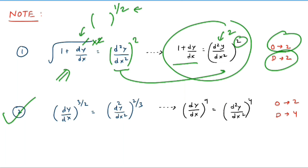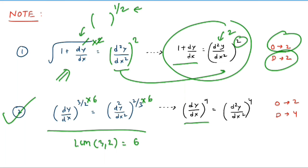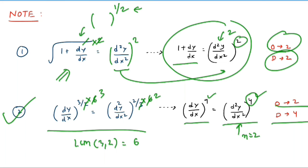Second radical example: (dy/dx)^(3/2) = (d²y/dx²)^(2/3). Take the LCM of 3 and 2, which is 6, and raise both sides to the power 6. You get (dy/dx)^9 = (d²y/dx²)^4, free from radicals. Now the maximum n is 2 so order = 2, and the power of that term is 4 so degree = 4.